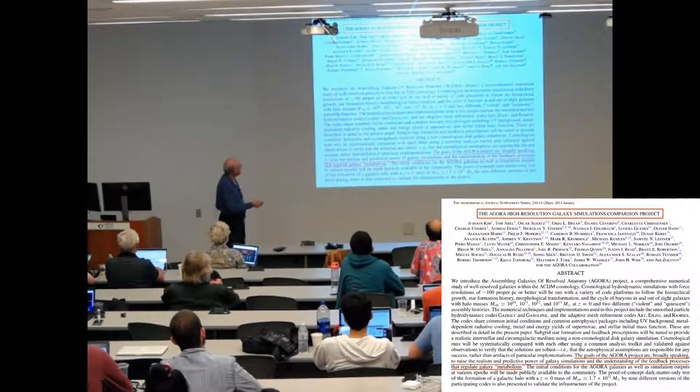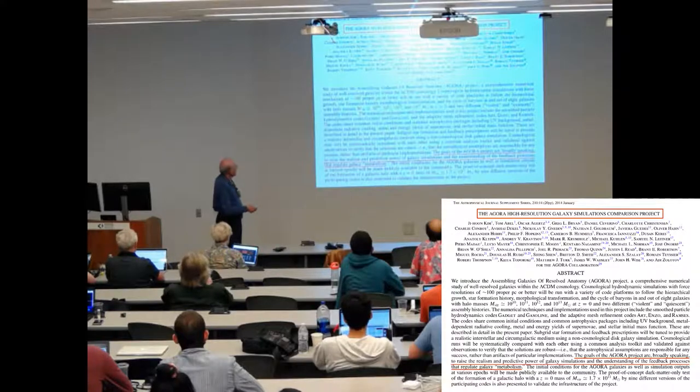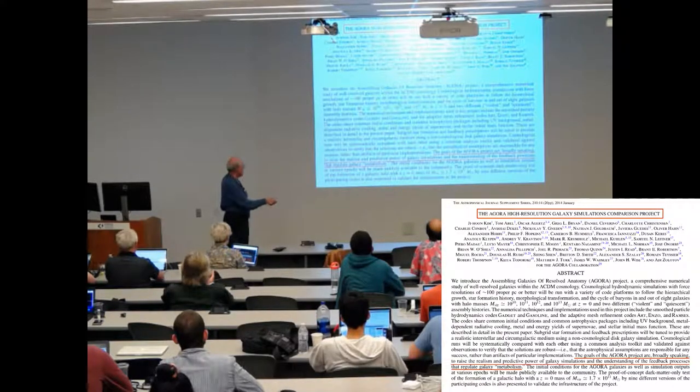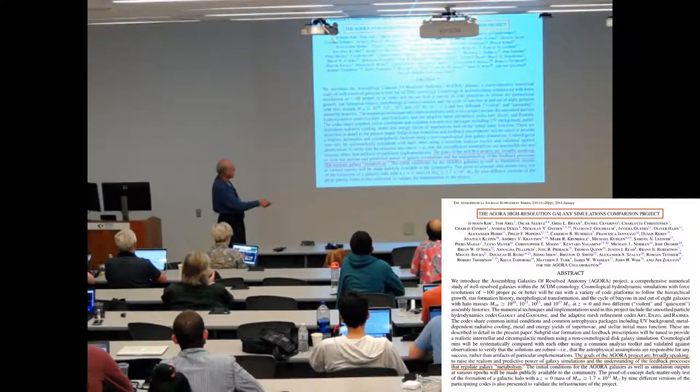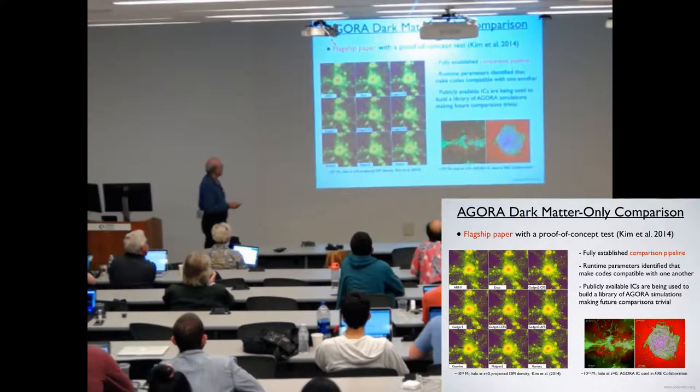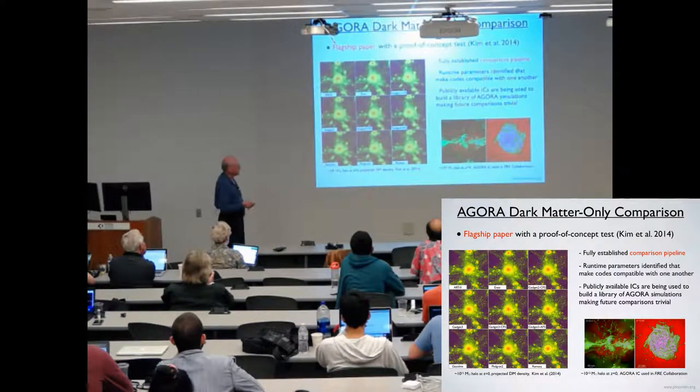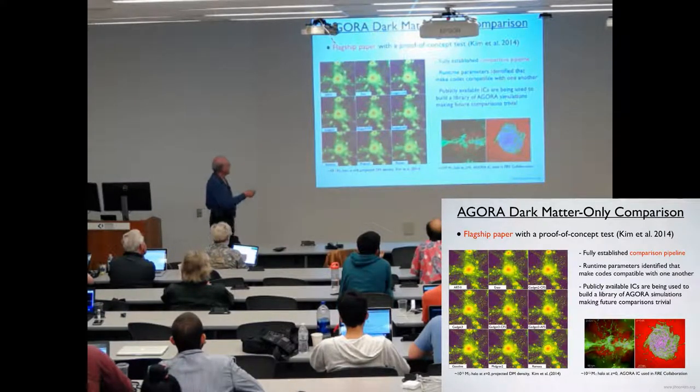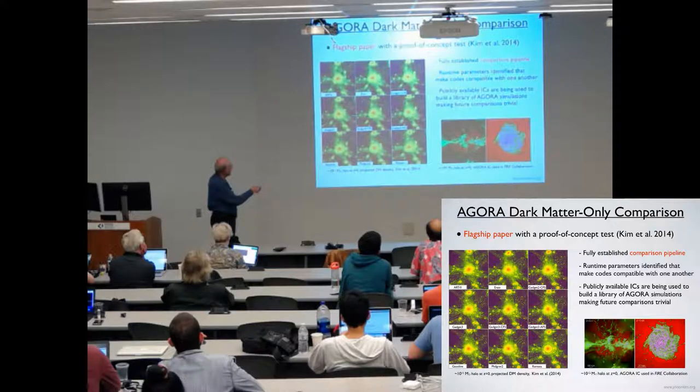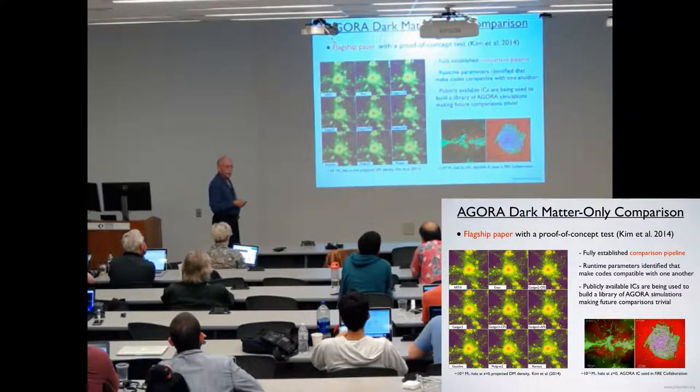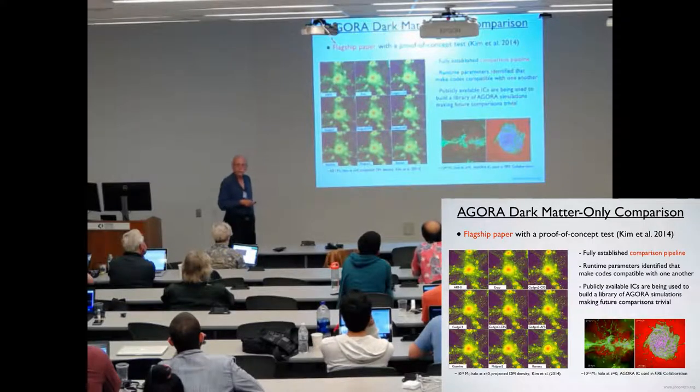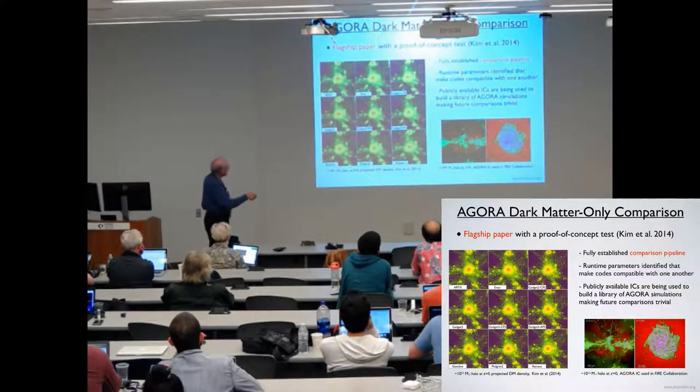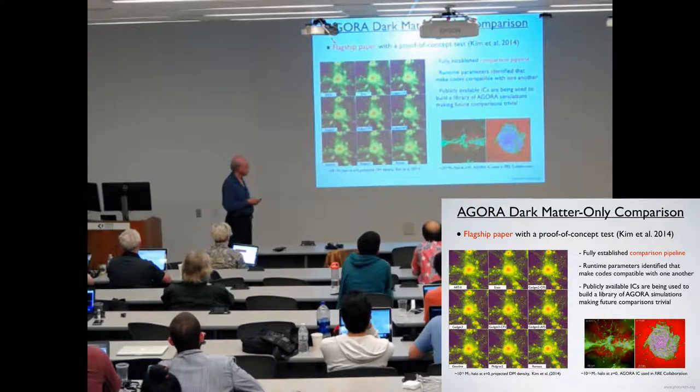So this was our first paper published in 2014, and the goals were to raise the realism and predictive power of galaxy simulation, and understanding of the feedback processes that regulate galaxy metabolism. This was a comparison of nine different codes simulating exactly the same cosmological region, but this is only pure dark matter simulation. And if you look really carefully, and there was a fair amount of analysis in the paper, you can actually see significant differences in the different codes. I mean, overall they're pretty similar, but there were also some significant differences.